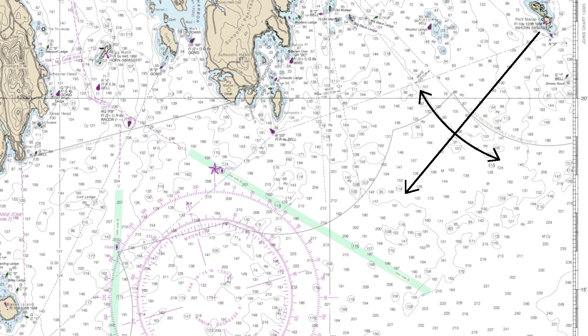Again the time is 1500, so now you have two lines of position taken at the same time. The only location you could be where both lines are correct is the point at which they cross. This is your fix at 1500. Although the two lines technically do give a fix, you have no confirmation in case you made an error with one of your lines. You really need three or more position lines to confirm your fix.